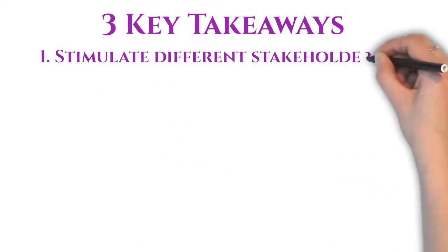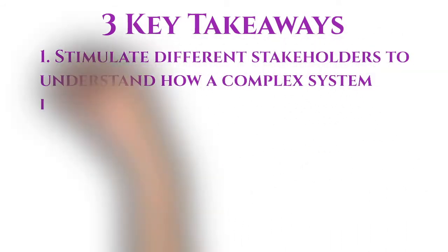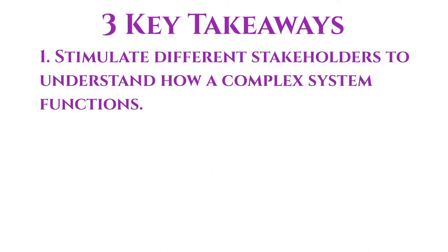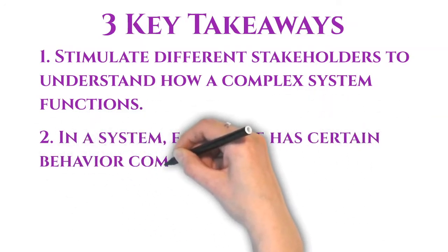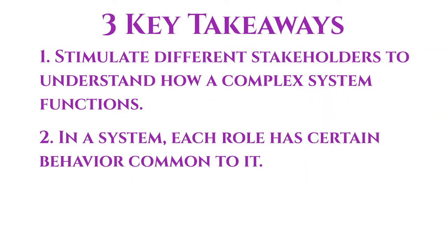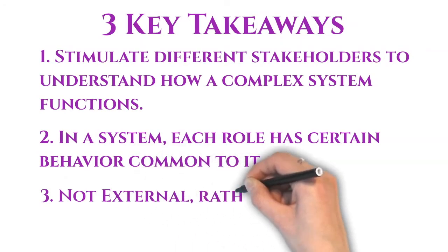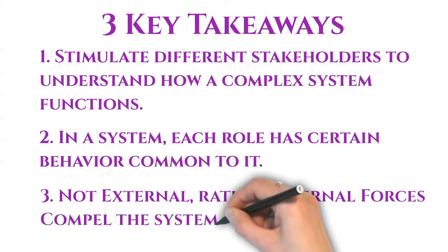Here are the three key takeaways of our supply chain training. One. This is a fantastic case to stimulate different stakeholders to understand how a complex system functions. It shows how the system causes its own behavior. Two. Irrespective of who holds a position in a complex system, each role has certain behaviors common to it. Three. It is not the external forces, rather the internal forces that compel the system to collapse.